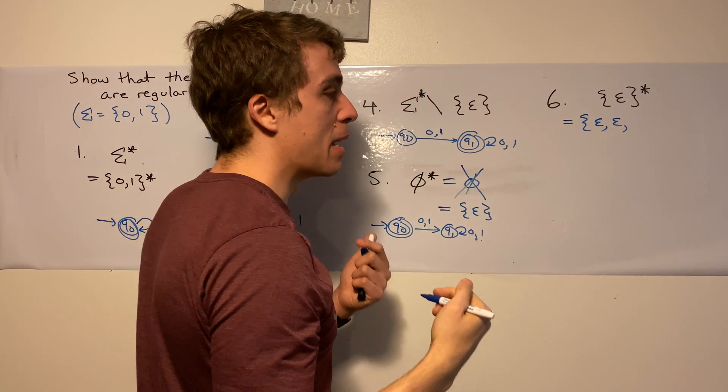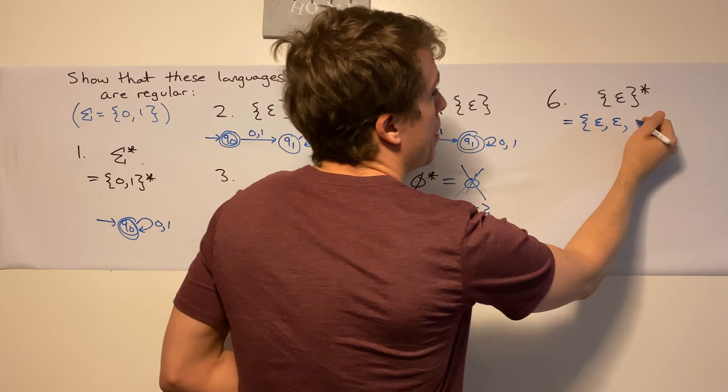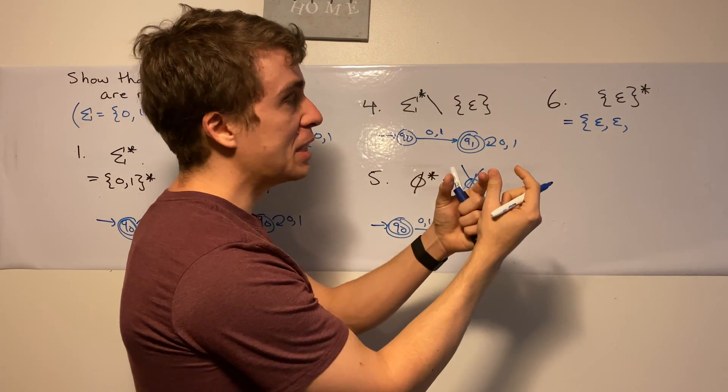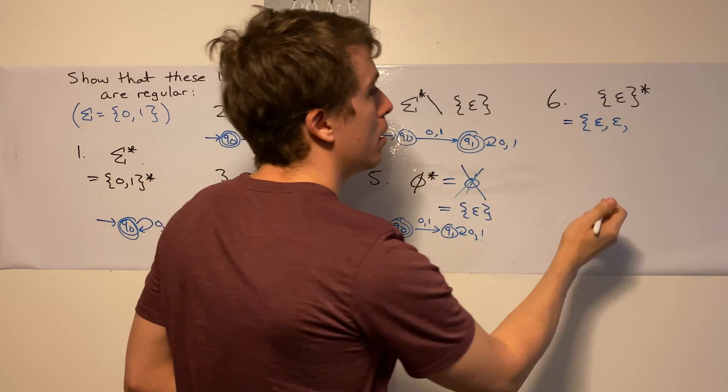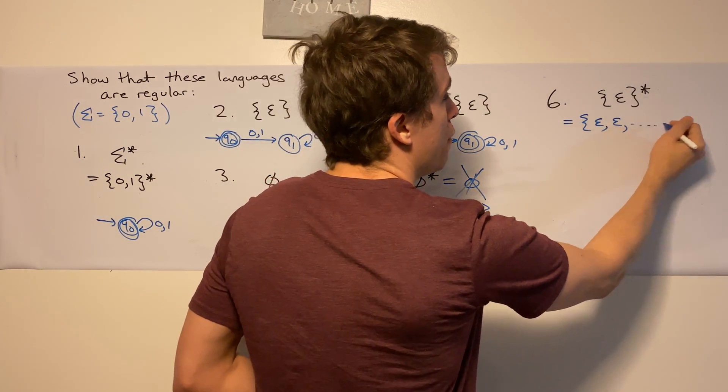that's just going to be empty string twice. Well, if you concatenate the empty string with itself, you get the empty string. Well, isn't that what we already have? So in fact, this language is just the empty string,